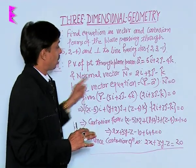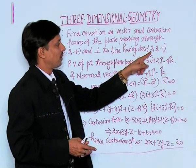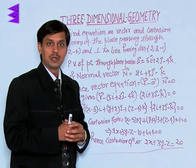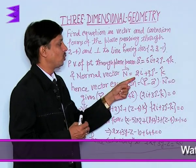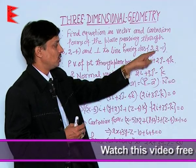Number 2: normal vector. If we talk about the normal vector, direction ratios of the normal were given as 2, 3, -1. So the normal vector will be 2i + 3j - k with the help of these direction ratios.